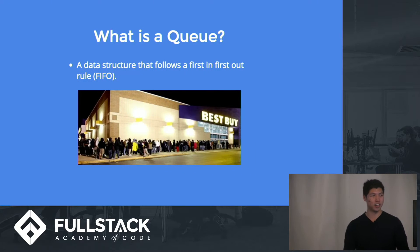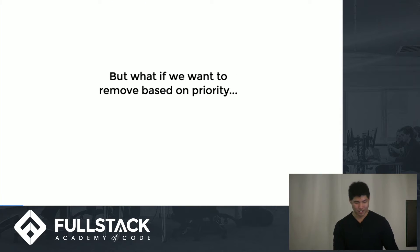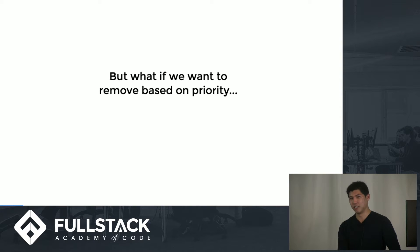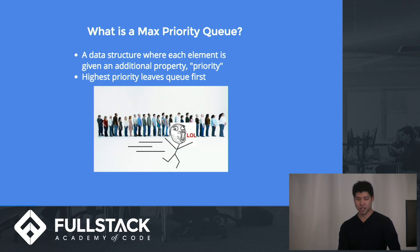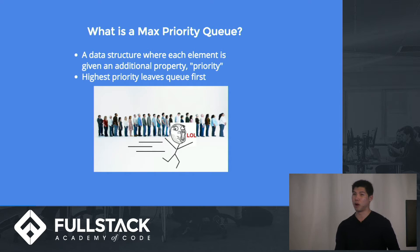First off, what is a queue? A queue is a data structure that follows a first in, first out rule, similar to what you would see in front of Best Buy on Black Friday. But what if we want to remove based on priority instead of who comes first? We can implement a max priority queue instead. A max priority queue is just like a regular queue, but each element has an additional property, namely priority. So the highest priority element leaves the queue first.